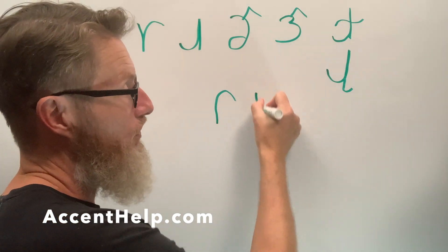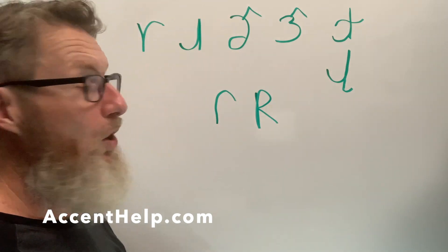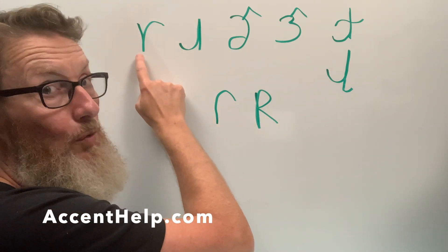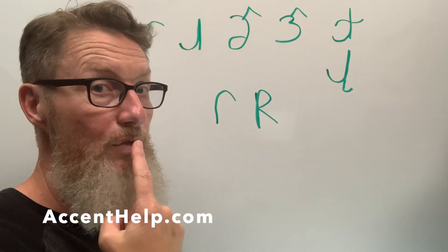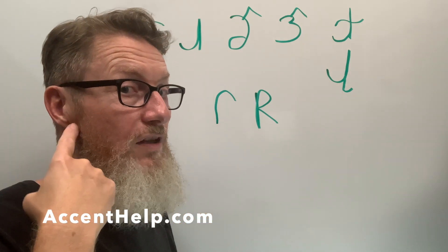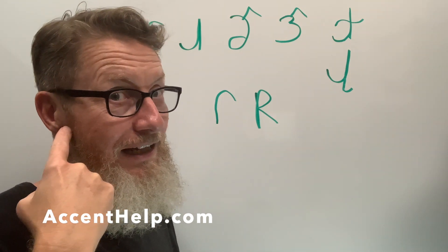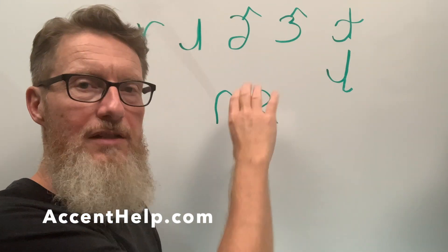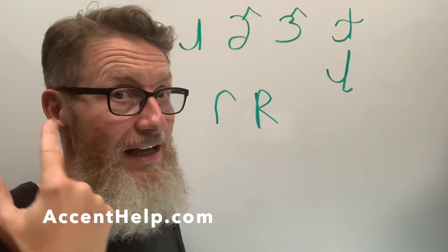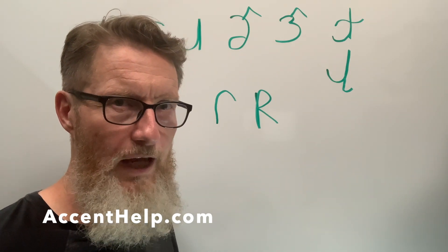The next symbol is the small capital R, or small cap R. We had the lowercase r representing the trill at the gum ridge. Then we get into this one — called the uvular trill — which looks like a capital R but is the same size as the lowercase ones. You might think of French or German as examples of this; it occurs in a number of languages.